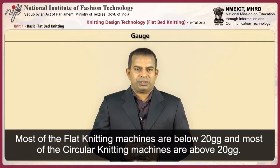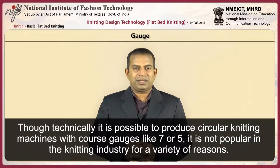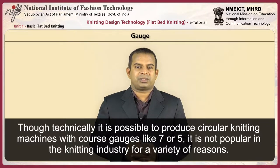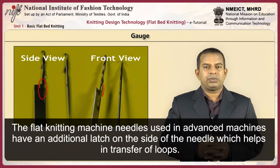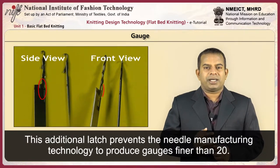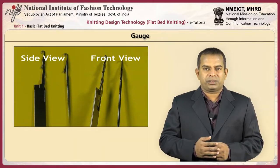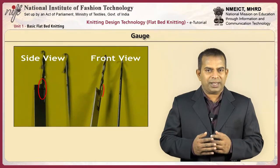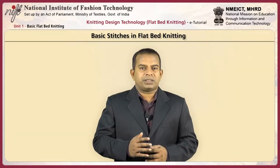Most flat knitting machines are below 20 gauge and most circular knitting machines are above 20 gauge. Though technically it is possible to produce circular knitting machines with coarser gauges like 7 or 5, it is not popular in the knitting industry. The flat knitting machine needles used in advanced machines have an additional latch on the side of the needle which helps in transfer of loops. This additional latch prevents needle manufacturers from producing gauges finer than 20. In the future, there may be a way to produce finer flat knitting needles as demand for flat knitted garments is ever increasing.